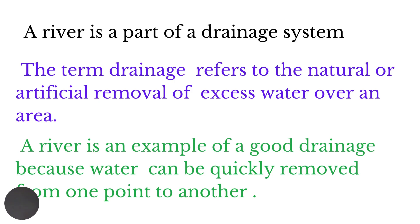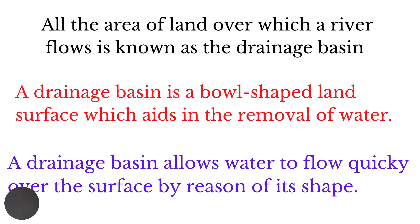A river is part of a drainage system. The term drainage refers to the natural or artificial removal of excess water over an area. A river is an example of good drainage because it can move water quickly over the surface. Areas of impeded drainage include swamps, ponds, and lakes. All the area of land over which a river flows is known as the drainage basin — a bowl-shaped or basin-shaped land surface which aids in the removal of water.